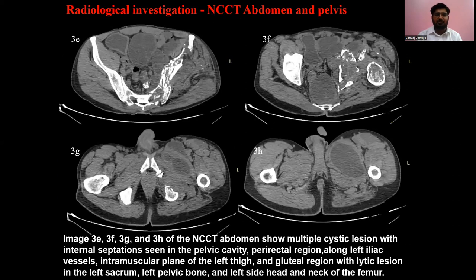Another NCCT abdomen and pelvis image, number 3e, f, g, h, shows multiple cystic lesions with internal septation seen in pelvic cavity, parailiacal lesions along the left iliac vessels, left intramuscular plane of the left thigh, gluteal lesions, and cystic lesions in the left sacrum, left pelvic bone, and left side head and neck of femur.